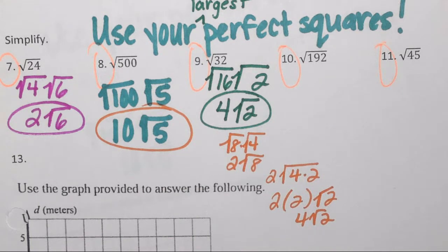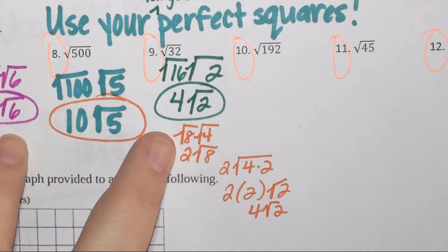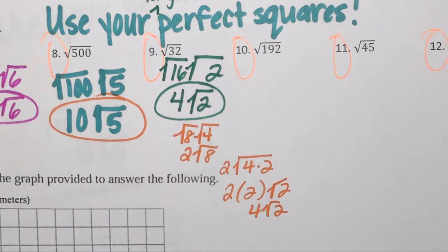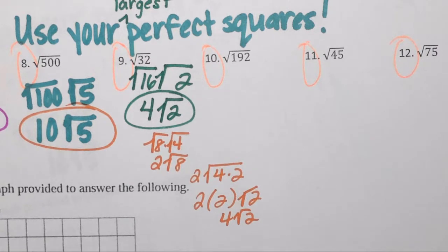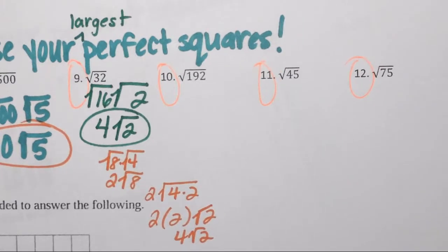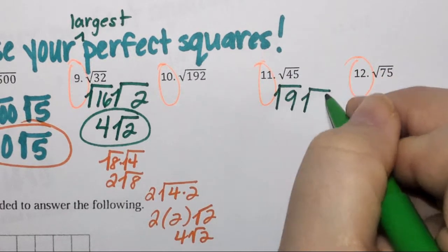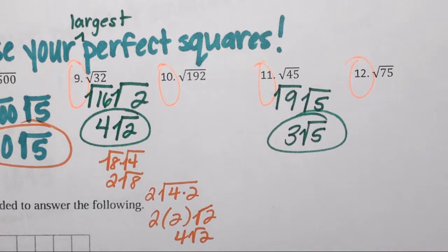Let's skip number 10 for a second because it's a big one. Let's go to number 11. We're going to give it to him. 9 times 5 is 45. I know square root of 9 is 3, so it ends up being 3 square root of 5. He is correct, and his group can have a point for that.